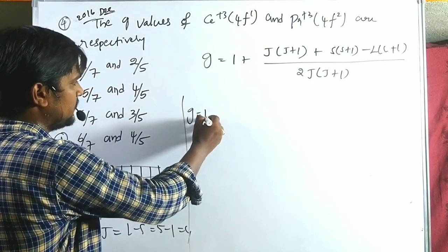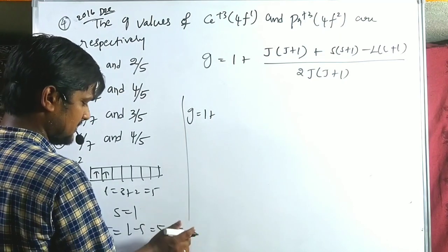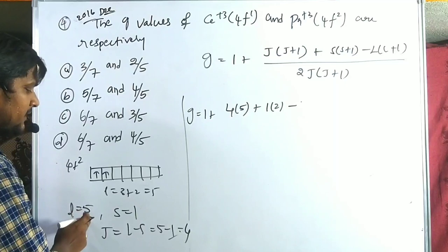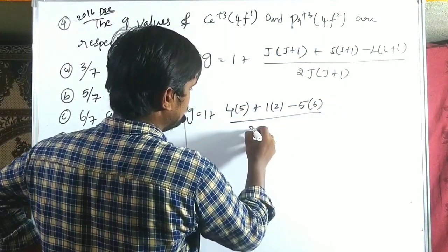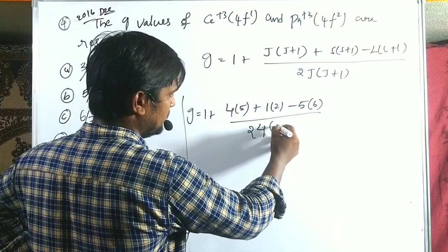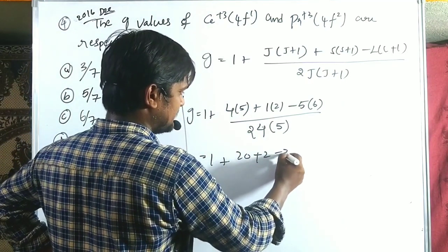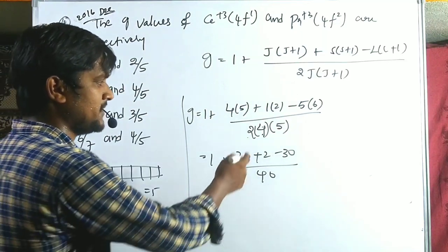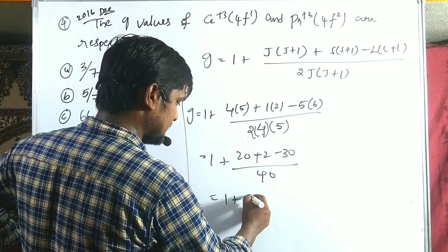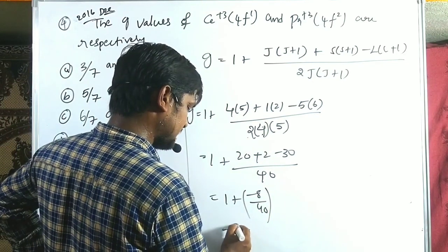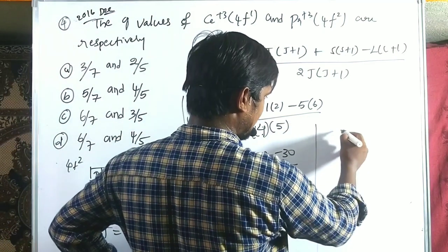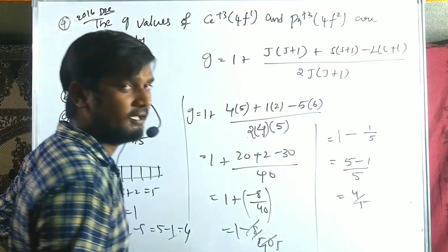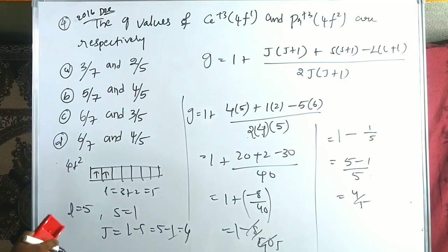g = 1 + [4(5) + 1(2) - 5(6)] / [2 × 4 × 5] = 1 + [20 + 2 - 30] / 40 = 1 + (-8/40) = 1 - 1/5 = 4/5. So the g-value for the second species is 4/5. First species: g = 6/7; second species: g = 4/5. Option D is correct. This is a 4-marker from CSIR December 2016.